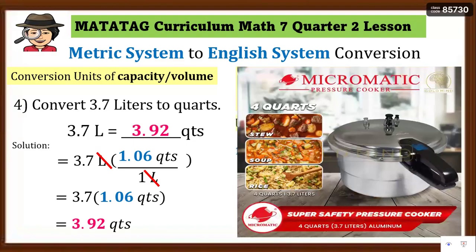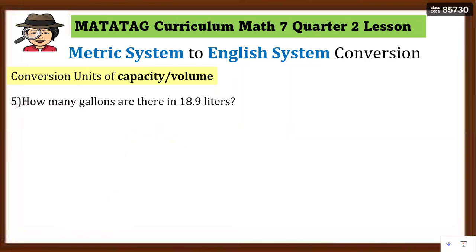In real life, say your parent gives you a Micromatic pressure cooker as a gift. Its capacity is 3.7 liters — that's our given value. When 3.92 quarts is rounded, it approximates to about 4 quarts. So that pressure cooker can be used to steam, cook soup, or rice.